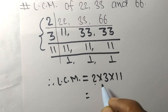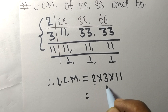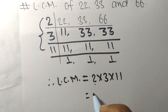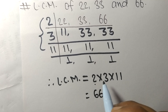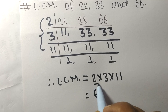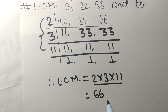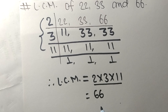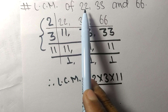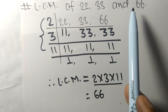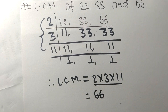2 times 3 means 6, and 6 times 11 means 66. So by multiplying all these numbers we get 66. Therefore, 66 is the LCM of 22, 33, and 66.